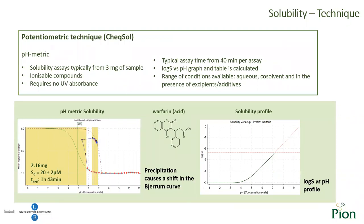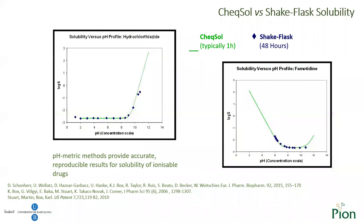The potentiometric Chexol technique is used for the determination of both kinetic and intrinsic solubility. It is only applicable to ionizable compounds, meaning that the aqueous pKa of the compound must also be determined. Using the aqueous pKa and the intrinsic solubility, the log S versus pH profile is calculated. The beauty of the Chexol method is that it can determine solubility from 40 minutes to 1–2 hours depending on the sample, while the shake flask method needs a minimum of 48 hours to reach equilibrium. We validated our Chexol technique, and on this slide you will find our published patent and very interesting papers explaining this technique.